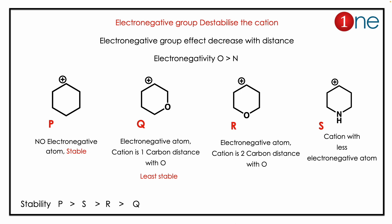You should know that an electronegative group destabilizes the cation, and this effect decreases with distance. If you look at it, oxygen is more electronegative than nitrogen, so the oxygen-bearing cations Q and R are more unstable. Among those, Q is nearby, so it is the least stable.